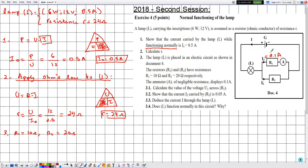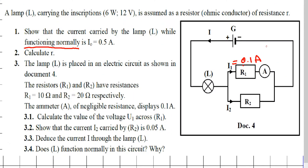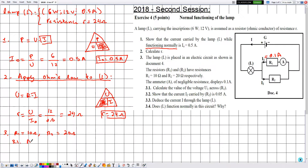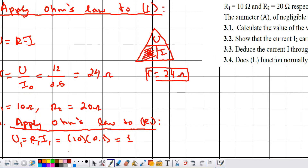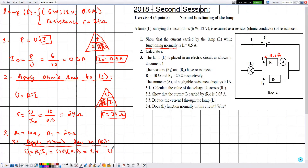Part 3.1: calculate the voltage U1 across R1. We apply Ohm's law to R1. Since U is the quantity we want, no triangle rearrangement is needed: U1 = R1 × I1 = 10 × 0.1 = 1 V. Since R is in SI and I is in SI, U1 is in volts. Therefore U1 = 1 V.